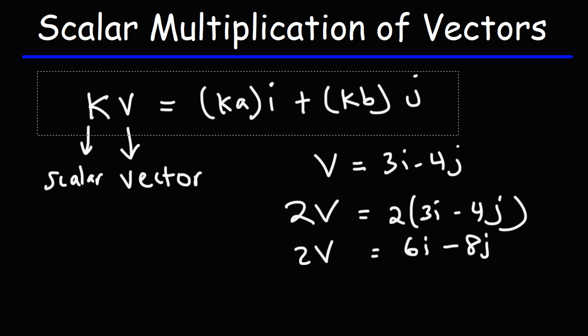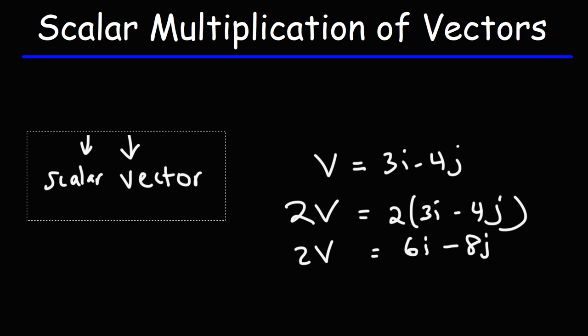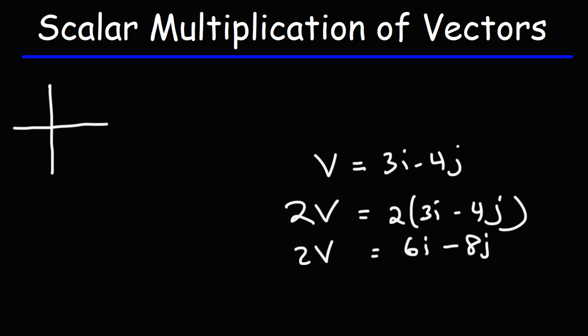So let's make a graphical representation of V. So if we were to plot it, think of i as the x value and j as the y value. So a vector that's 3i and negative 4j, to draw it, we need to travel three units to the right, four units down.